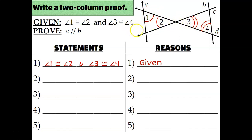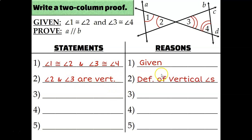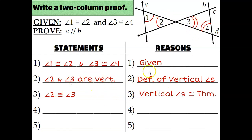Do you notice that angle 2 and angle 3 are vertical angles? You'll often see this vertical angle step paired together: two and three are vertical by the definition of vertical angles, and since they're vertical, they must be congruent by the vertical angles congruence theorem.